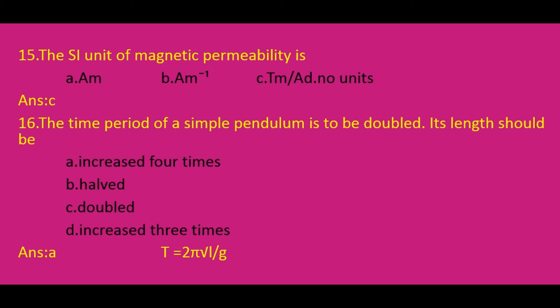The time period of a simple pendulum is to be doubled — its length should be? Using the formula T = 2π√(L/G), if we double the time period of the simple pendulum, then the length should be increased 4 times. So the answer is A.